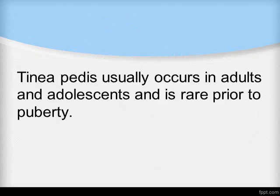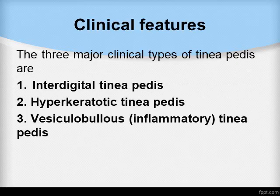It usually occurs in adults and adolescents and is rare before puberty. The three major clinical types are interdigital Tinea Pedis, hyperkeratotic Tinea Pedis, and vesiculobullous Tinea Pedis.